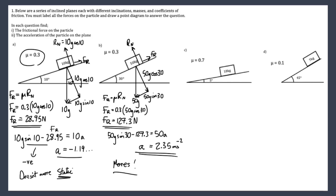Question c — label forces again. We have RN, 18g down, 18g sin5 and 18g cos5. Let's make an early prediction: we haven't got much of a slope here and we've got a very high coefficient of friction, so I don't think it's going to move. But we need to do the math on it anyway.